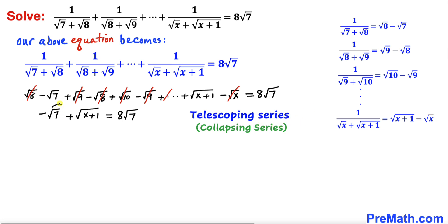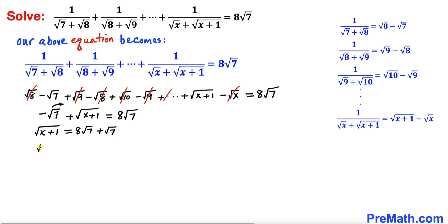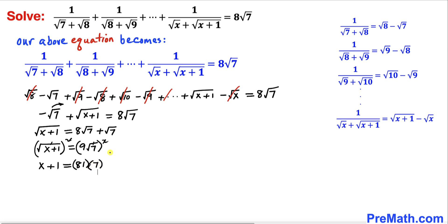Moving negative square root of 7 to the right hand side, we get square root of x plus 1 equals 9 times square root of 7. Squaring both sides, the square root and square cancel on the left, giving x plus 1 equals 9 squared times 7, which is 81 times 7 equals 567. Subtracting 1 from both sides, our x value turns out to be 566.